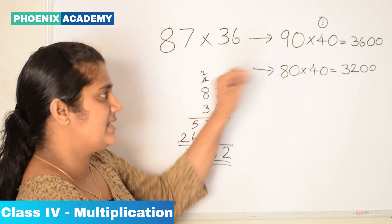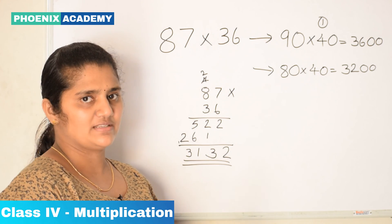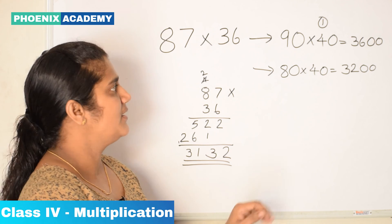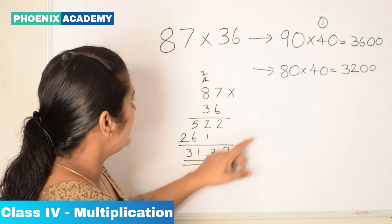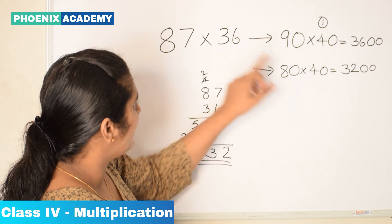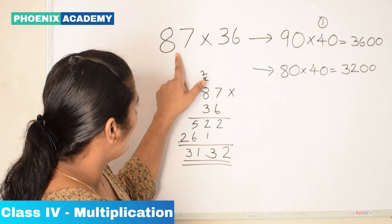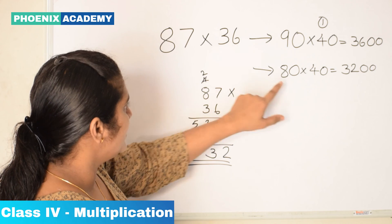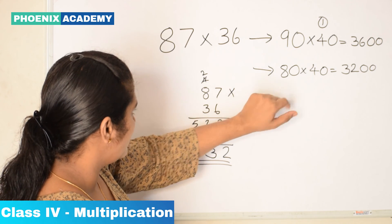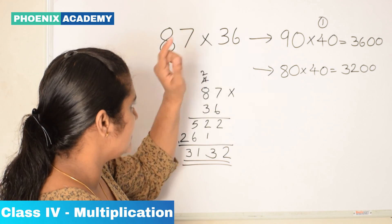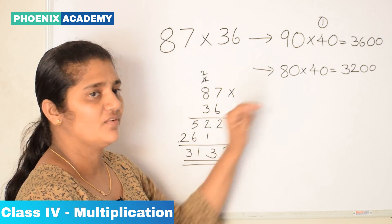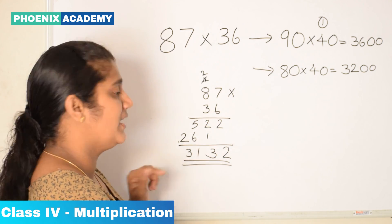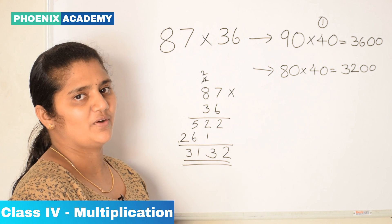Both estimated products are correct, but the product obtained by rounding one number down and the second number up is closer to the actual product.